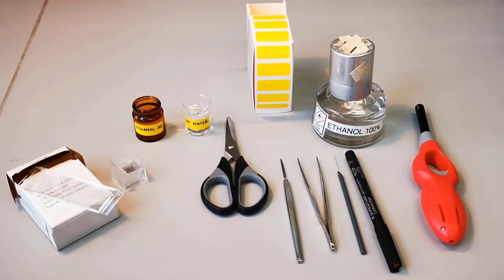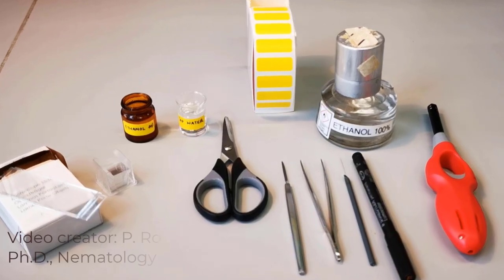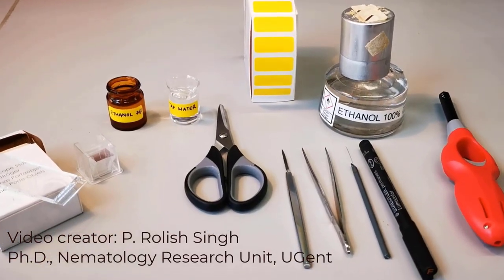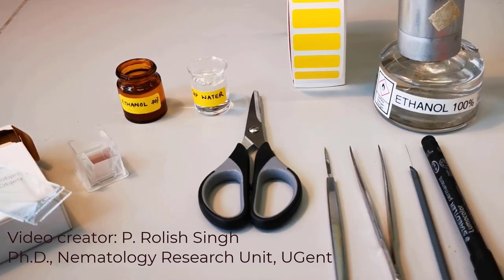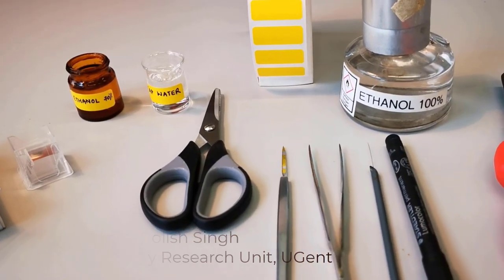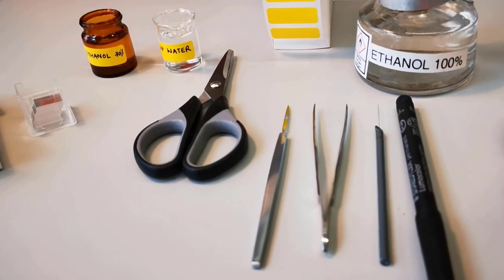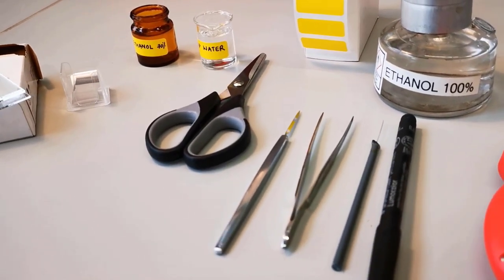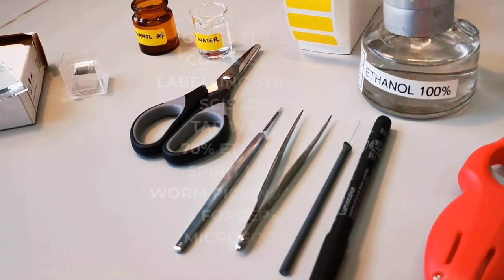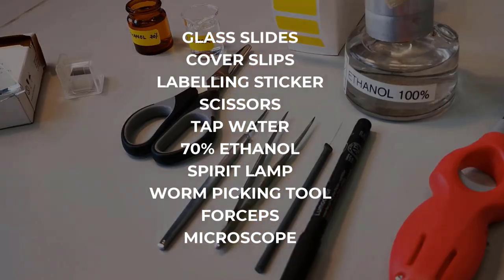For identification of a nematode specimen, we usually begin by preparing a temporary mount of the nematode. The specimen is then studied morphologically, after which molecular analysis of the same specimen is also often conducted. In this video, we will see how a nematode is temporarily mounted and then recovered from the slide.